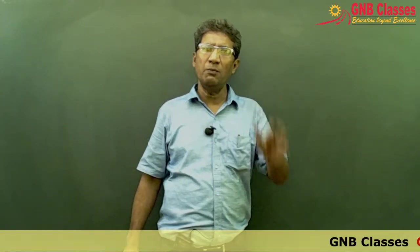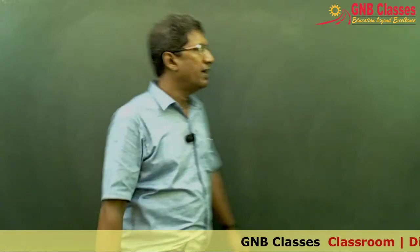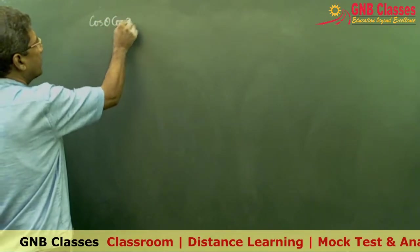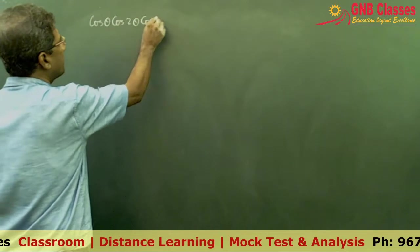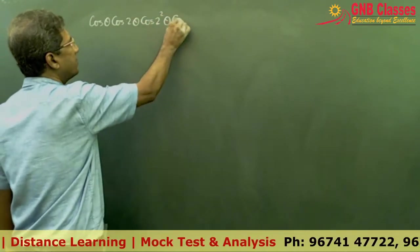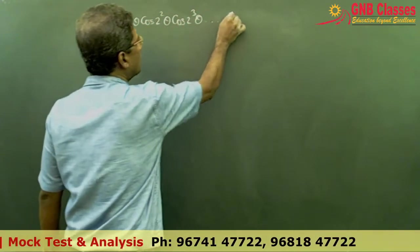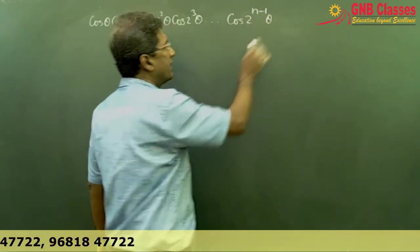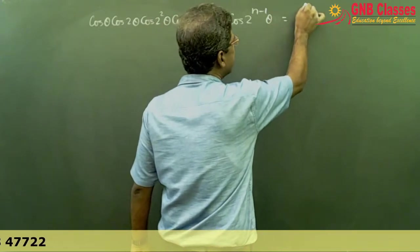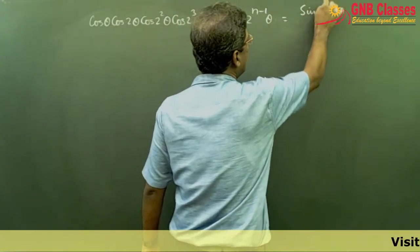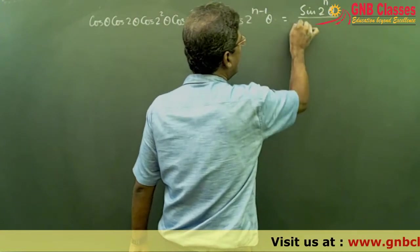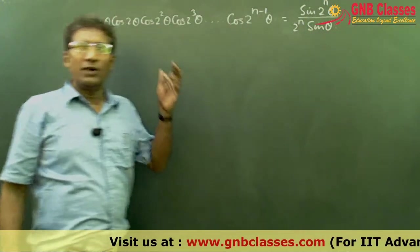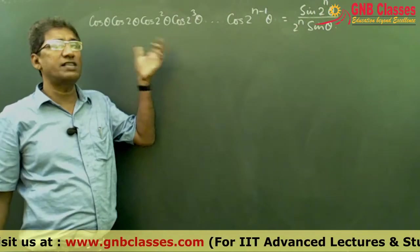There is another very important formula to be remembered: cos θ · cos 2θ · cos 2²θ · cos 2³θ, continuing n times up to cos 2^(n-1)θ. This equals sin(2^n θ) divided by 2^n sin θ.